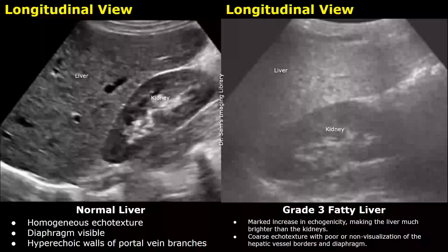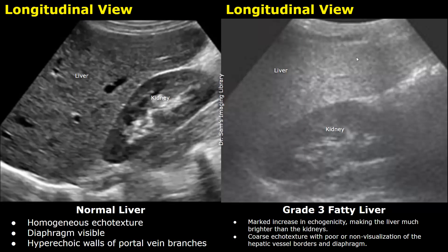In a grade three fatty liver, the liver parenchyma is extremely bright — it is hyperechoic — and it is difficult to see the lower half of the image. The liver even has a coarse echo texture and is much brighter than the kidney. No intrahepatic vessels are visible and we can barely see the diaphragm.